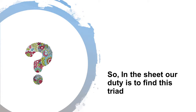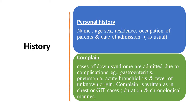The key question is: where in the clinical sheet do you look for these three features? The developmental history is where you look for developmental delay. The neurological examination is where you look for hypotonia. And the general examination is where you look for the abnormal dysmorphic features.